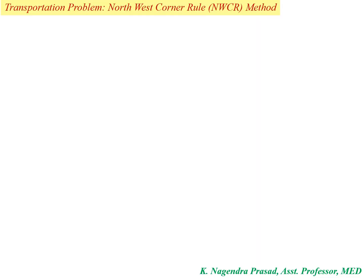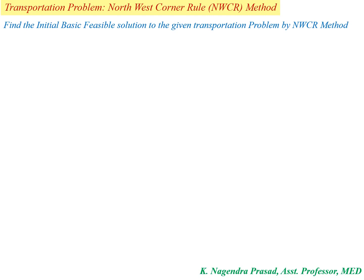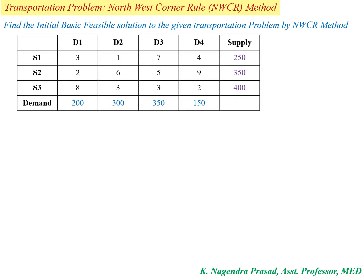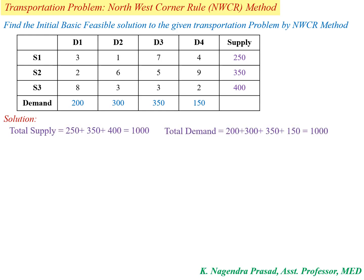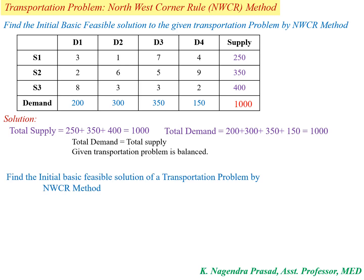Hello everyone. Today I am going to discuss how to find the initial basic feasible solution by the North-West Corner Rule method. I will explain with one example problem. First, we have to check whether the given transportation problem is balanced or not. We check the total supply and demand — total supply is 1000 and total demand is 1000, so total supply equals total demand, and the given transportation problem is balanced.